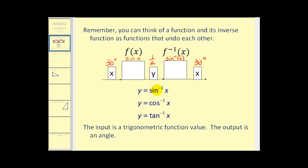Inverse trigonometric functions are written as we see here, y equals inverse sine x, but we can also write this as arc sine x. And inverse cosine x can be written arc cosine x, and inverse tangent x can be written as arc tangent x. The thing to remember is that for these inverse trigonometric functions, the input is a trig function value and the output is an angle.